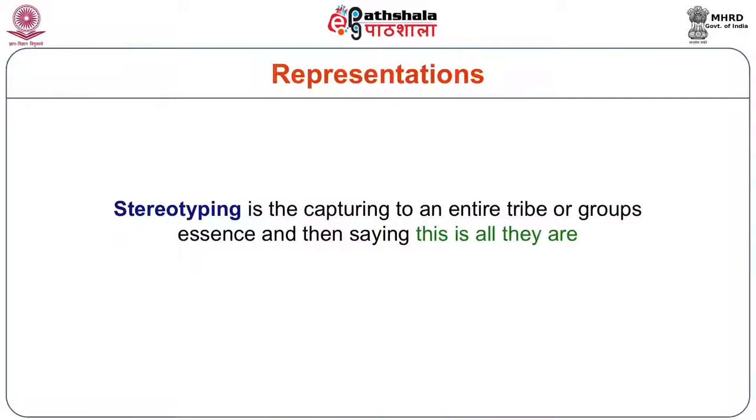This is what we call stereotyping. Stereotyping is the representation of a group of people — ethnic, religious, linguistic — as though they are constant. Stereotyping is the capturing of an entire tribe or group's essence and then saying, this is all they are. As Americans would say during the war on terror, all terrorists are Muslims, so all Muslims are terrorists. Now all Muslims are not terrorists. But the stereotyping becomes effective because it captures the imagination of the people. Representations deny the people the dynamism of change — they capture you, they limit you and then they can do with you what they want.